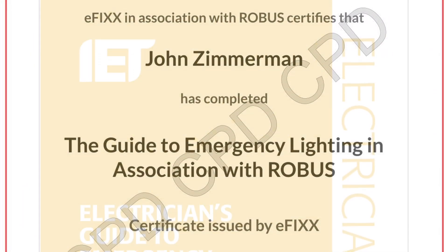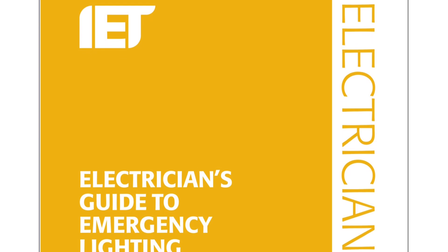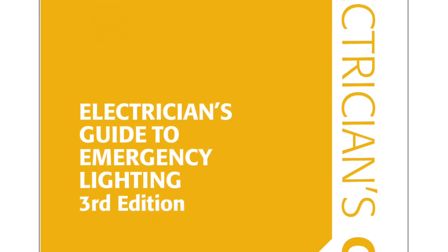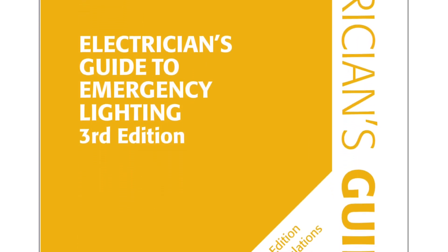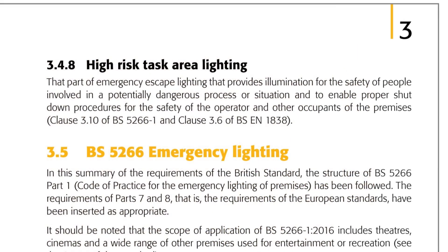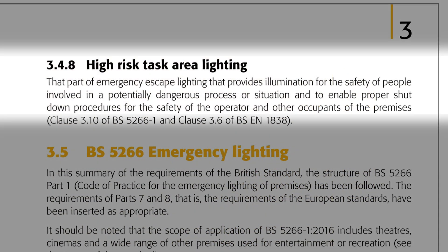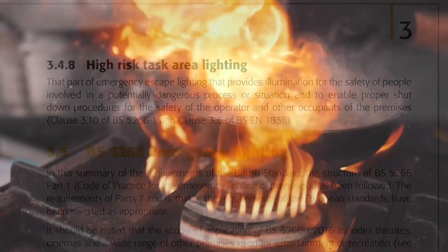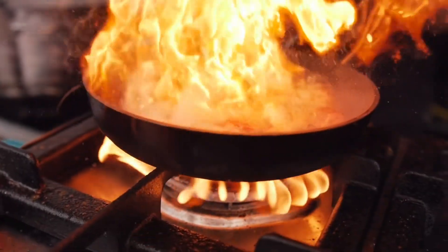High risk task area lighting is very neatly defined in the Electrician's Guide to Emergency Lighting. In the definitions section it states that this kind of lighting is that part of emergency escape lighting that provides illumination for the safety of people involved in a potentially dangerous process or situation, and to enable proper shutdown procedures for the safety of the operator and other occupants of the premises.